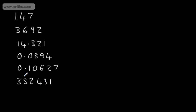If we look at 352,431, the first significant figure is in the hundreds of thousands — the 100,000s column. The second significant figure is the 10,000s. The third is the thousands. The fourth is hundreds. The fifth is tens. So if I wanted to round this correct to four significant figures, I'd be rounding to the nearest 100.